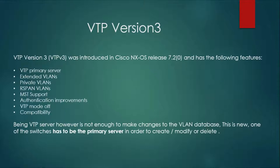Second, VTP version 3 supports extended VLANs. In VTP version 2, only normal-range VLANs were supported in server/client mode, and transparent mode was required for extended-range VLANs. VTP version 3 supports all VLANs from 1 to 4094, including the extended VLAN range.